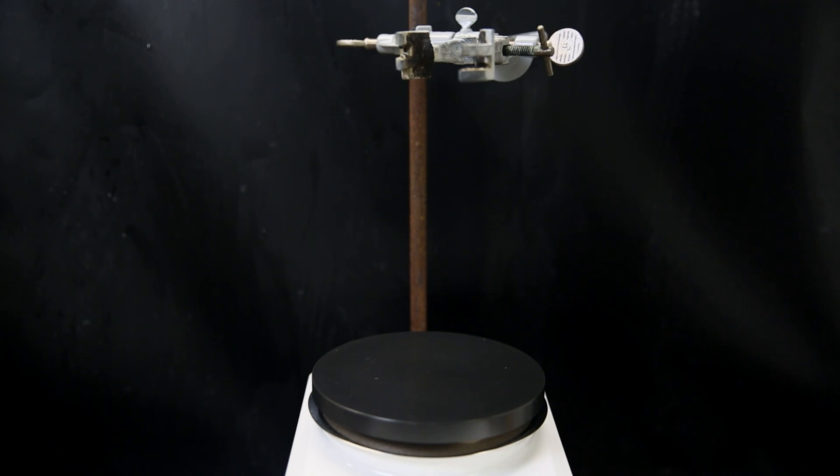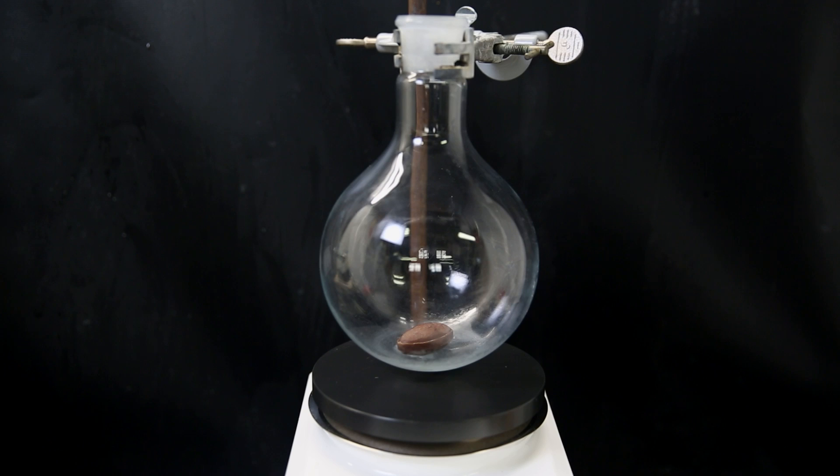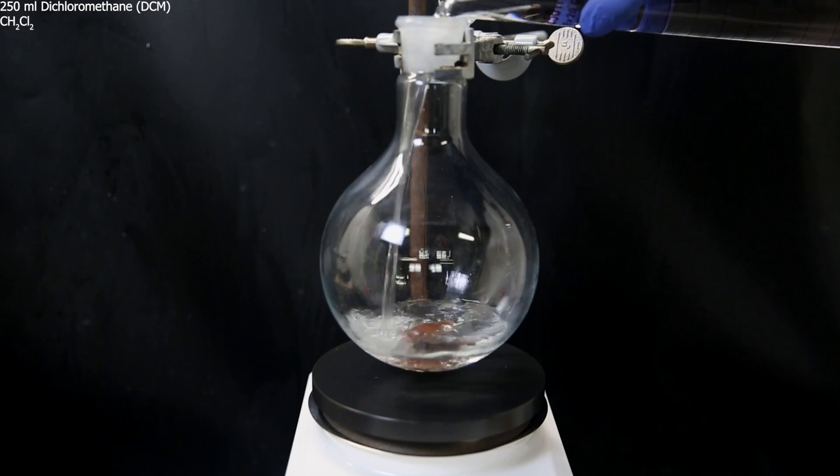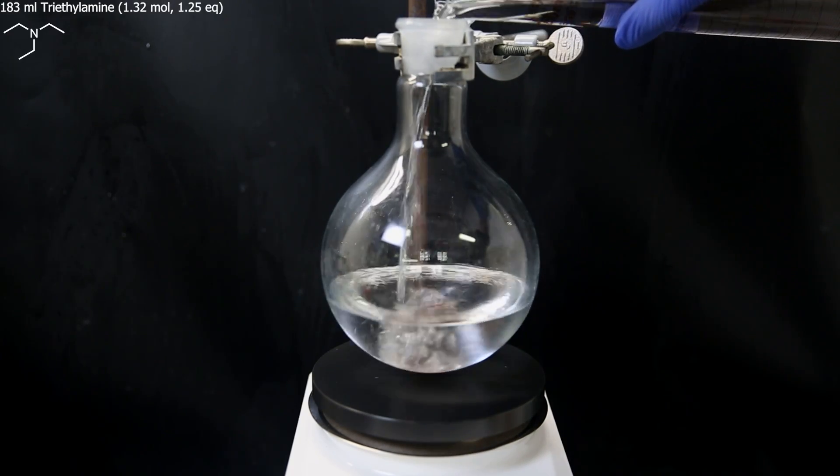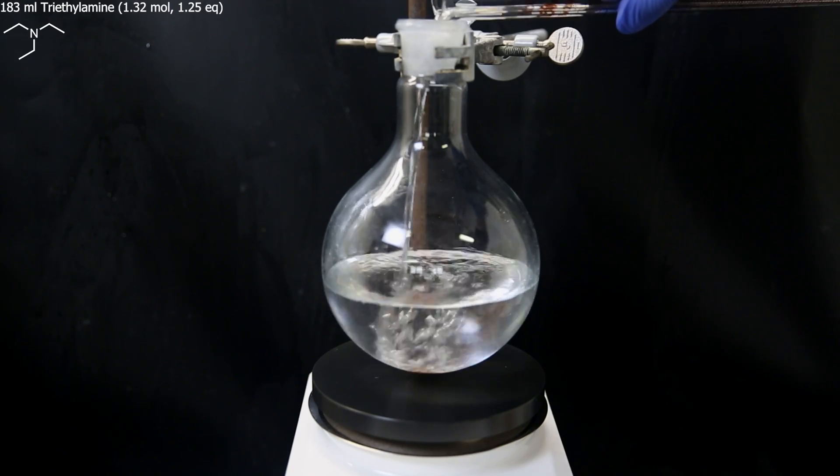So to get started, I set up my new stir plate and a large flask with a stir bar. I then add in 250 ml of DCM as the solvent. And as the base, I add in 183 ml of stinky, fishy triethylamine.